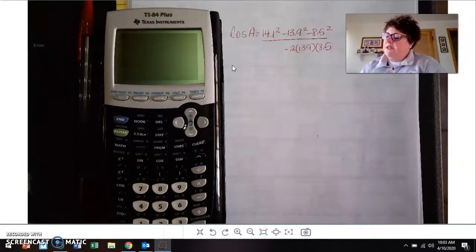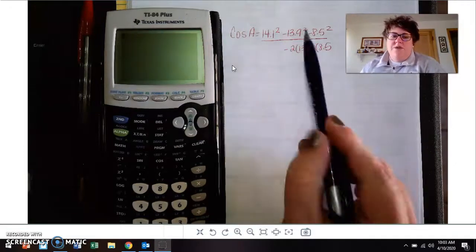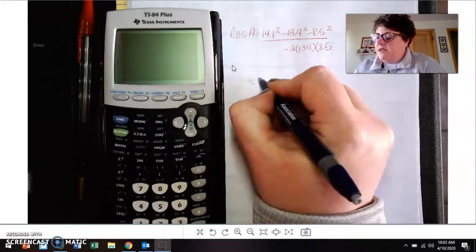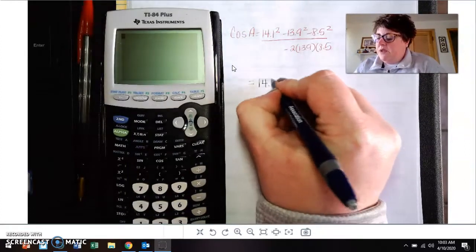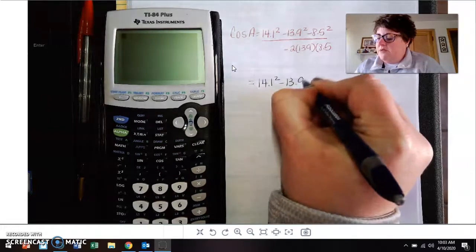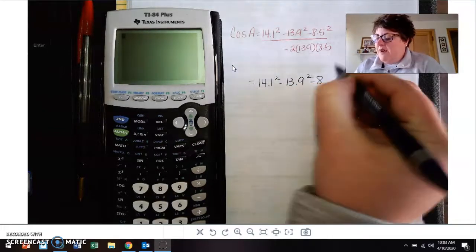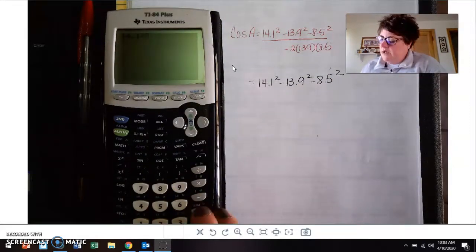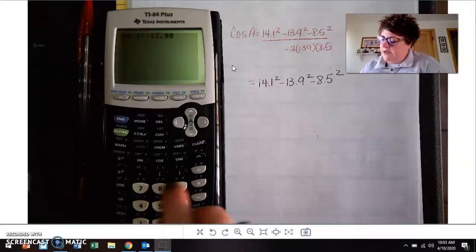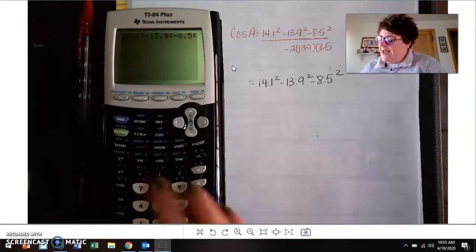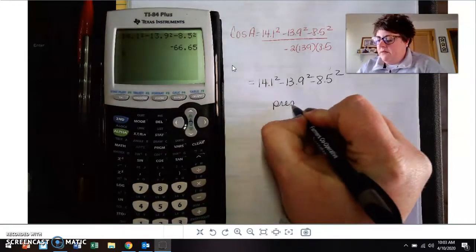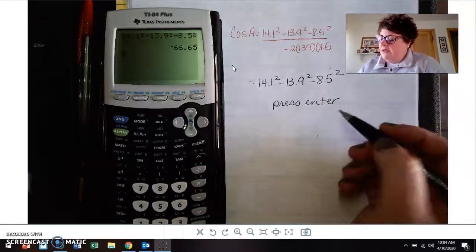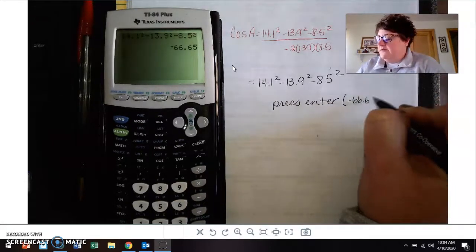So I took two portions of two problems from the notes yesterday. On the first problem we did, this was the first one we found. The way that I usually put this into my calculator is, first of all, I do the top. So 14.1 squared minus 13.9 squared minus 8.5 squared, and then I press enter. And I get that value, and you should get negative 66.65.